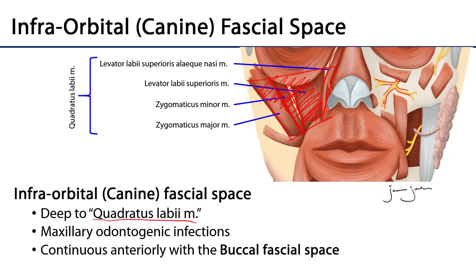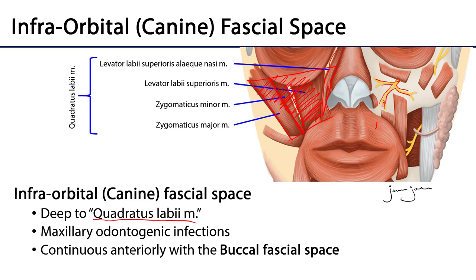This is an exquisitely well-named space. It's into this space that odontogenic infections from maxillary teeth may travel. So if you were to have a left canine infection of the root tip, it would very likely travel superficially into this space — hence the name canine fascial space.